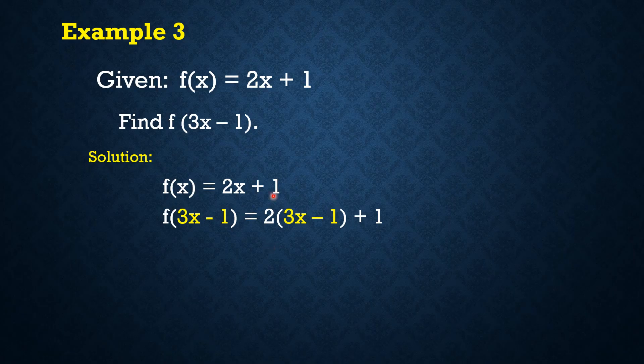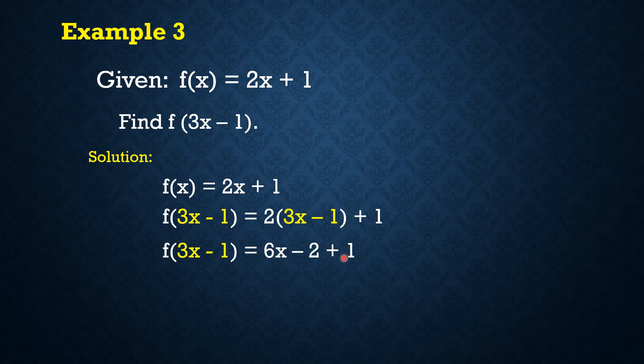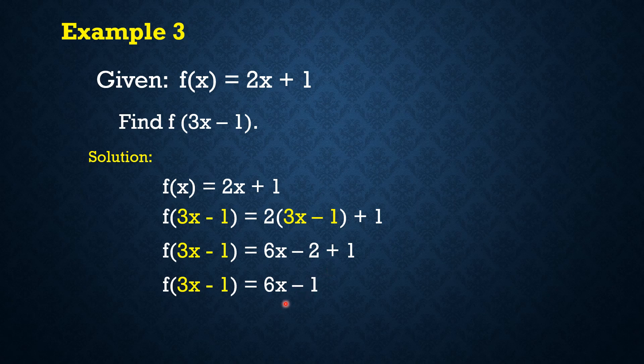By simplifying, applying distributive property in this case, so 2 times 3x that is 6x, 2 times negative 1 that is negative 2, and then we still have plus 1. Simplify natin further, combining similar terms. And therefore, we have f(3x - 1) = 6x. Negative 2 plus 1 is negative 1, that is why we have 6x - 1.